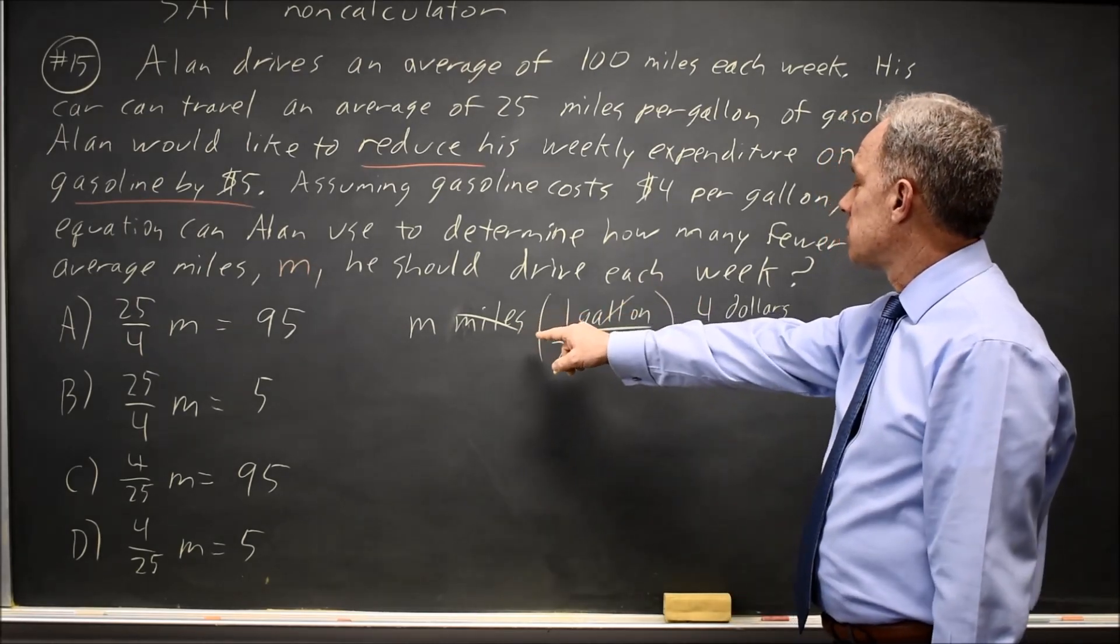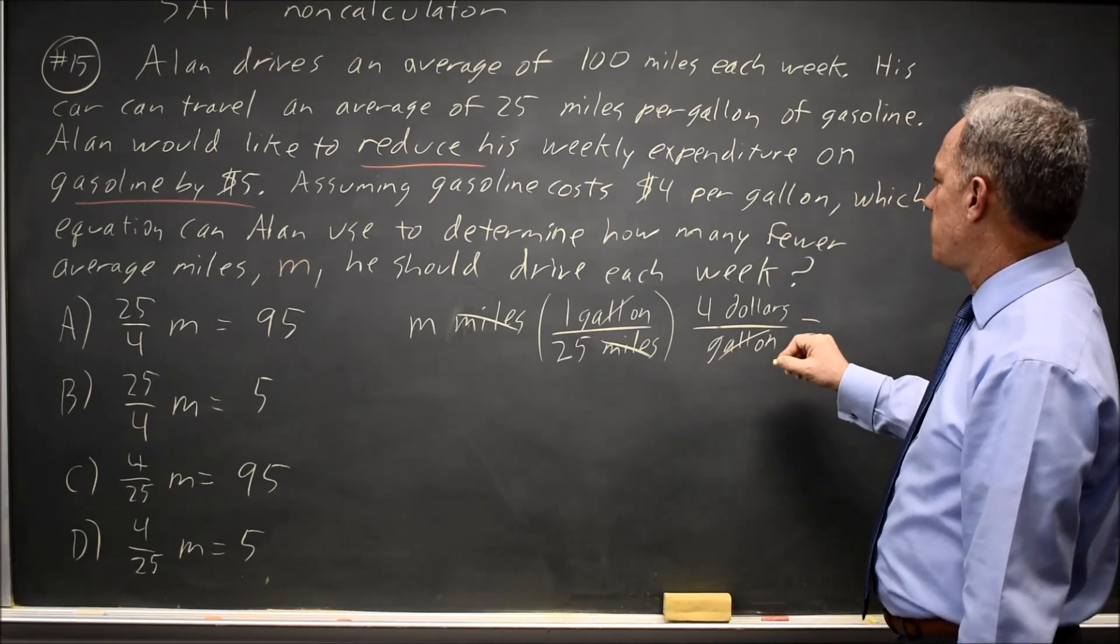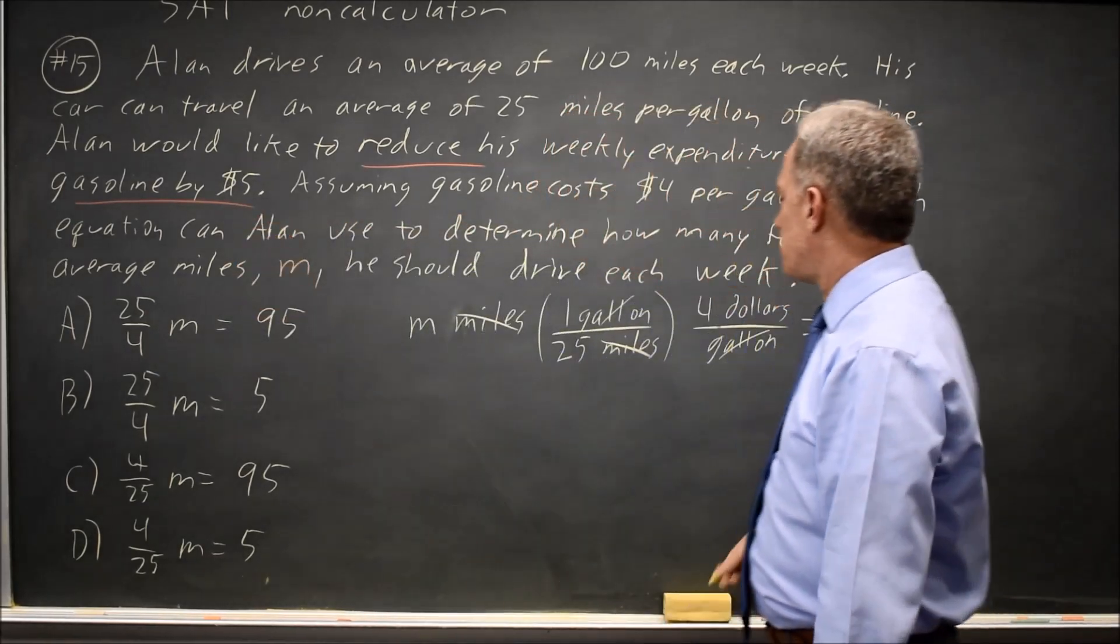So this is the number of dollars saved. And we want the number of dollars saved to reduce our expenditure by five dollars, so we want that to be five.